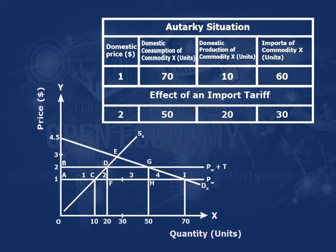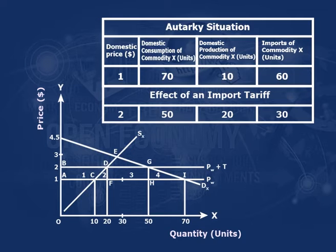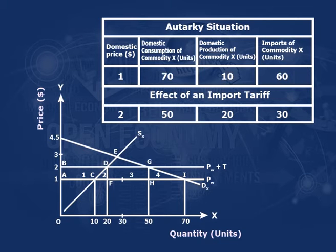Now the effect of an import tariff: domestic price is $2, domestic consumption of commodity X is 50 units, domestic production of commodity X is 20 units, and import of commodity X is 30 units. An imposition of import tariff increases the domestic price of commodity X in nation A from $1 to $2. It reduces domestic consumption from 70X to 50X due to price rise, increases domestic production of the import-competing industry from 10X to 20X, and the total import of nation A falls from 60X to 30X.